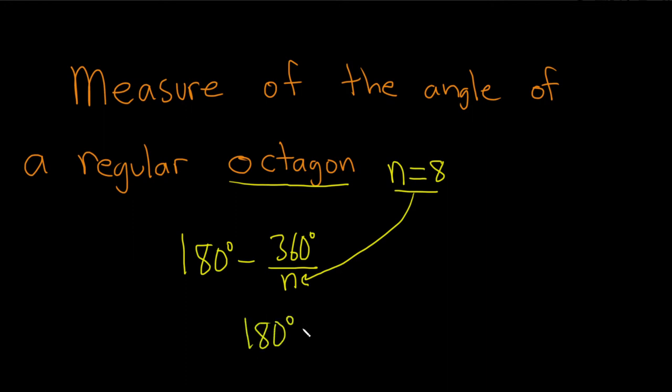So 180 minus 360 over 8. I'm definitely going to use a calculator to do this. So 360 over 8 is 45.